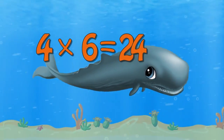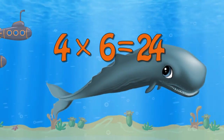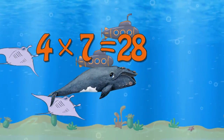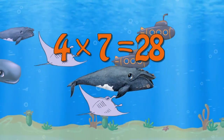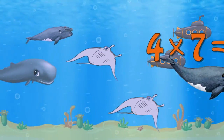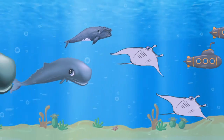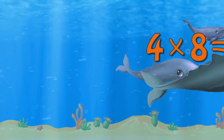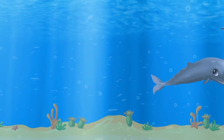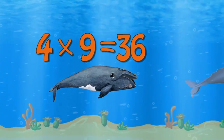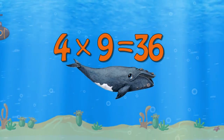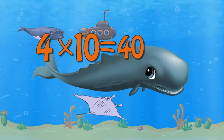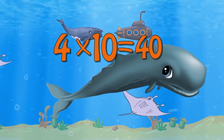Four times six is twenty-four. Four times seven is twenty-eight. Four times eight is thirty-two. Four times nine is thirty-six. Four times ten is forty.